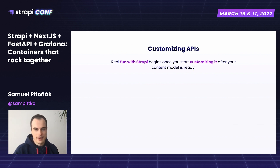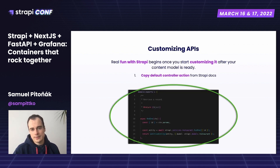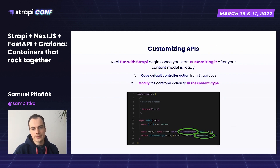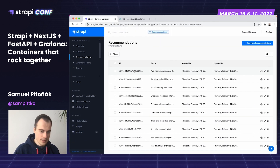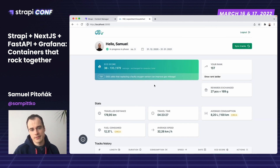The real fun with Strapi begins when you start customizing it — that's the conclusion I came to once I started using it properly. If you want to customize an API, you copy the default controller action from Strapi docs, modify it to fit your content type, and add your desired business logic. In this case, I'm randomizing a recommendation each time it's requested. There are 10 recommendations in the CMS and in the user interface I randomize them, so each given number of seconds another recommendation is shown.